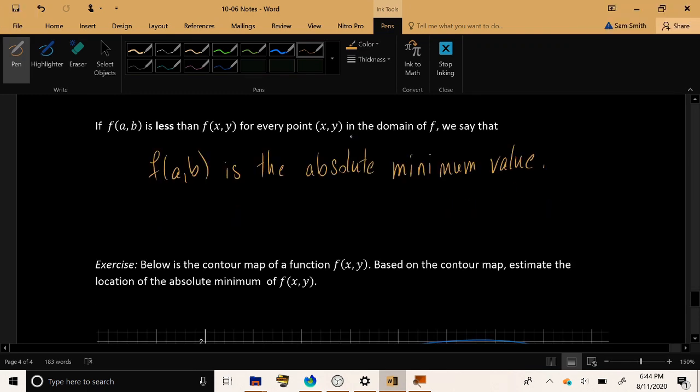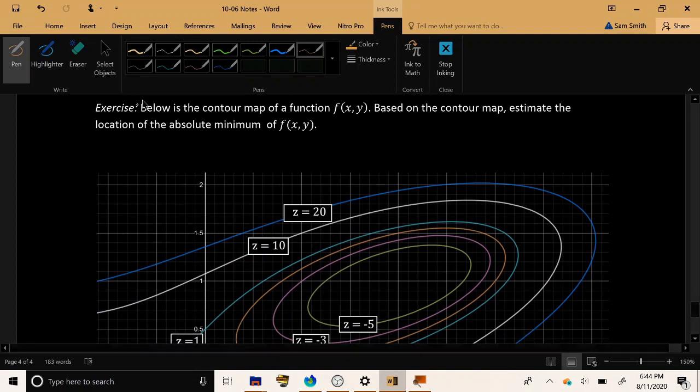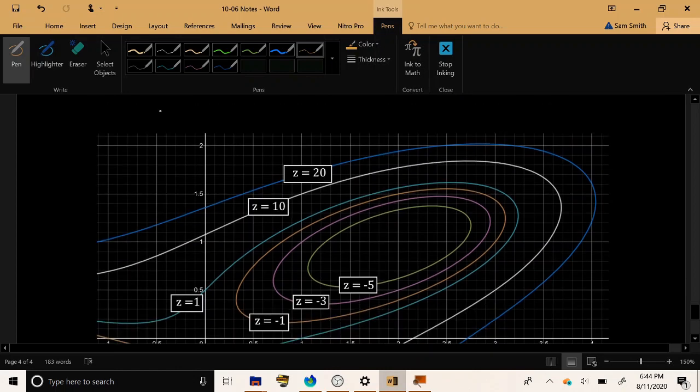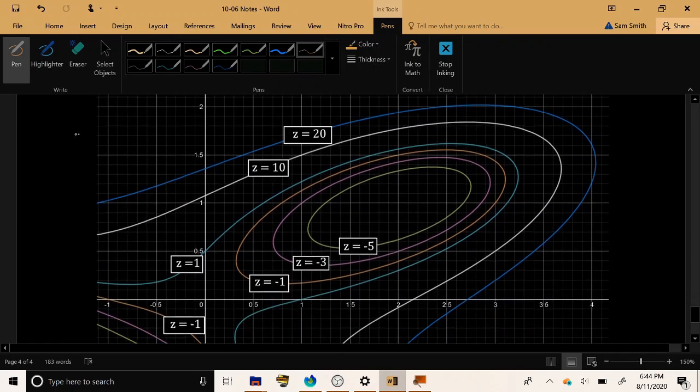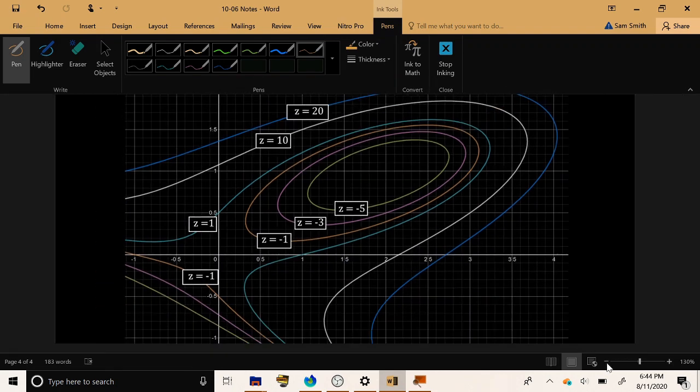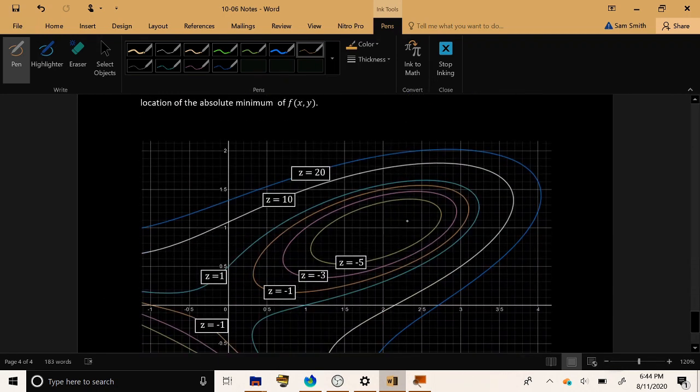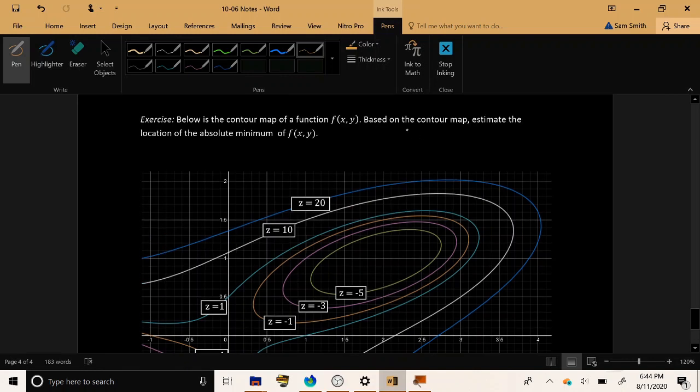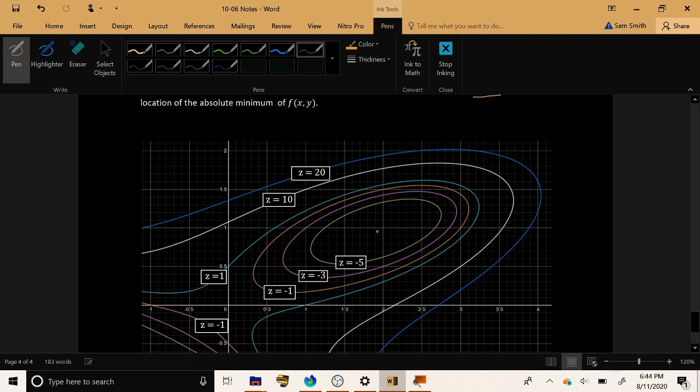So let's do one final example. Here's a contour map of the function f(x,y). Based on the contour map, let's estimate a location of the absolute minimum. Okay. So we have a variety of different level curves drawn here. And my eye is drawn to what appears to be this hole in the middle of the graph. Now because I don't have an infinite collection of level curves drawn for me here, I really can only make a guess at what is going on in the center of this hole.